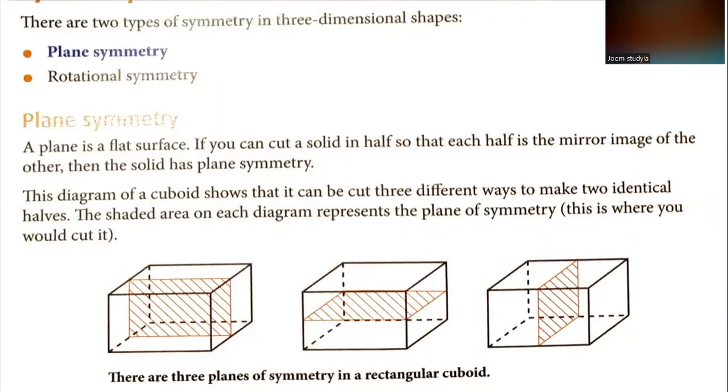Plane symmetry. A plane is a flat surface. If you can cut a solid in half so that each half is a mirror image of the other, then the solid has plane symmetry. This diagram of a cuboid shows that it can be cut three different ways to make two identical halves. The shaded area on each diagram represents the plane of symmetry. There are three planes of symmetry in a rectangular cuboid.